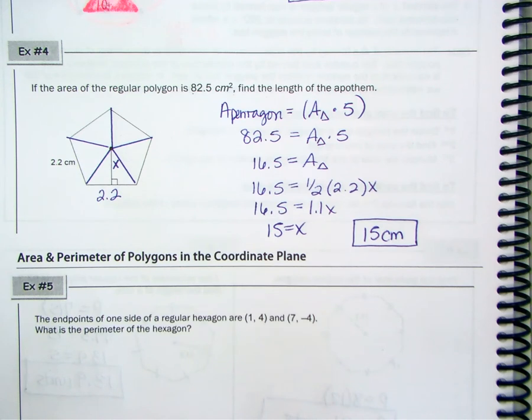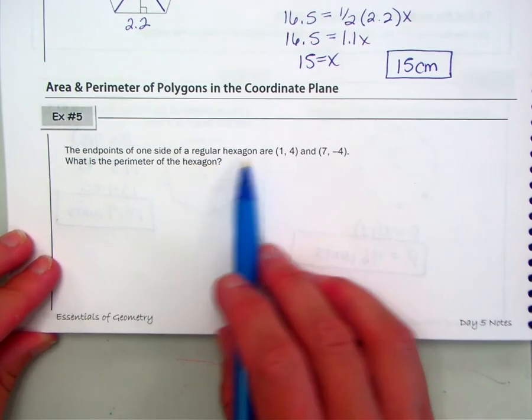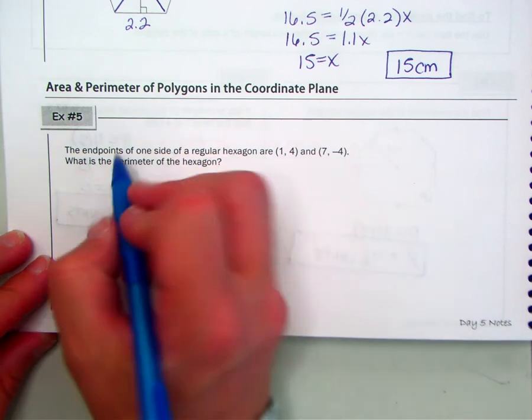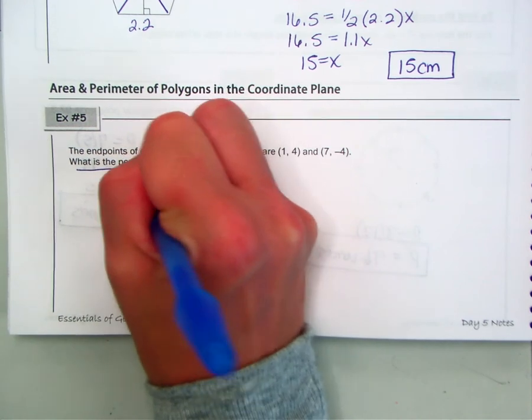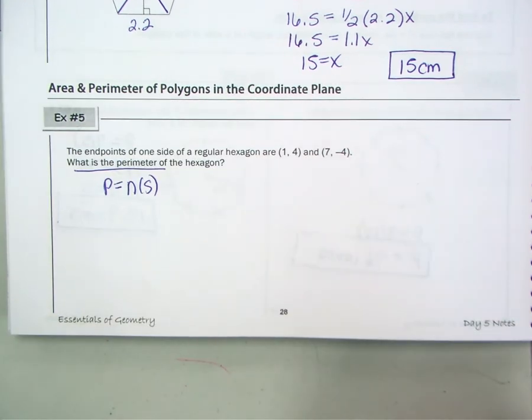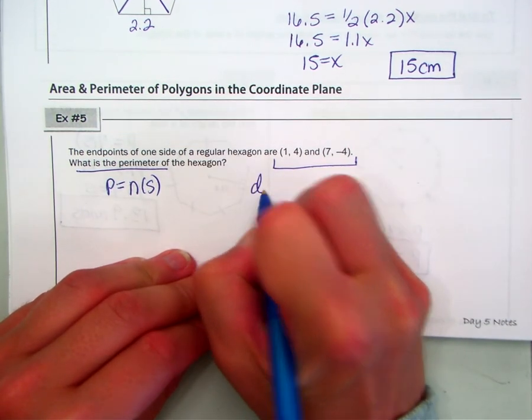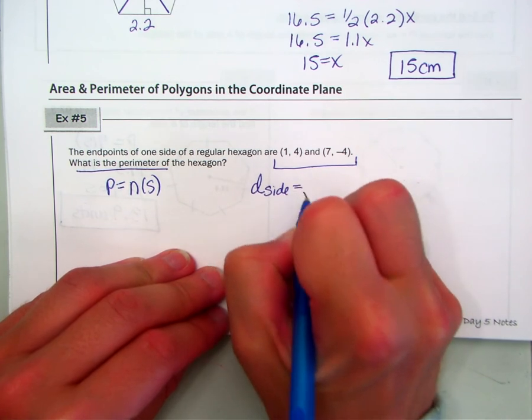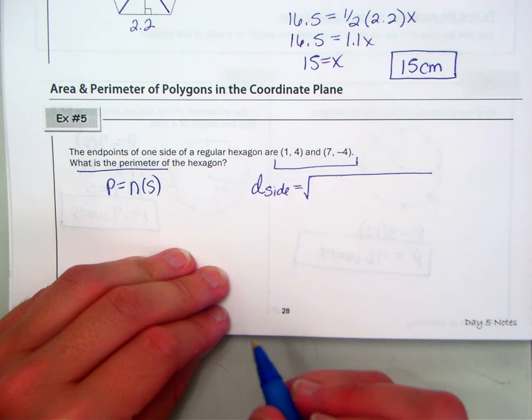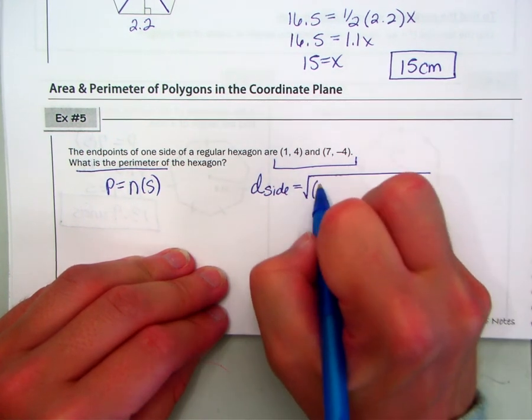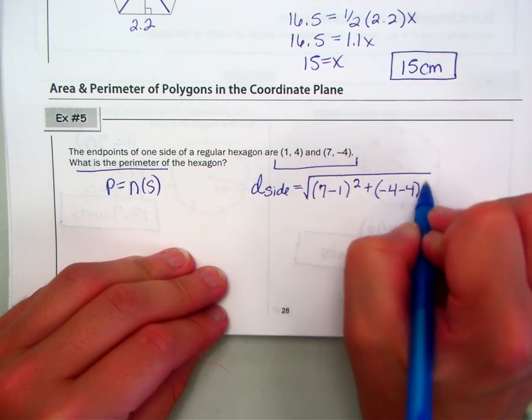Now moving to the coordinate plane. So the endpoints of one side of a regular hexagon are (1, 4) and (7, -4). What is the perimeter? So remember, perimeter is the number of sides times the side length. Well, we can calculate the side length by calculating the distance of our side. Distance formula, if you grab your spiral bound index cards, is the square root of (X2 minus X1) squared plus (Y2 minus Y1) squared.